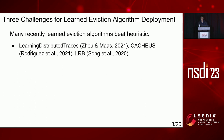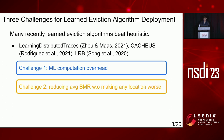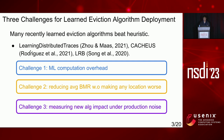Many recently proposed learning-based cache algorithms show promising results over heuristics, but we find they are not directly applicable to deploy in a large-scale production environment. There are three challenges: machine learning computation overhead, reducing average byte miss ratio without making any location worse, and measuring new algorithm impact amid production noise. Next, I will explain each one.